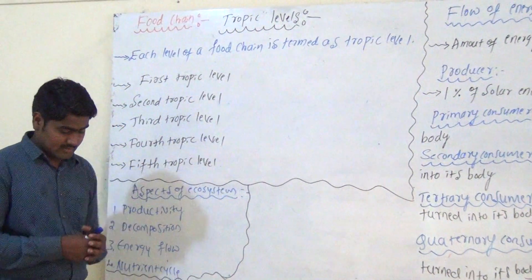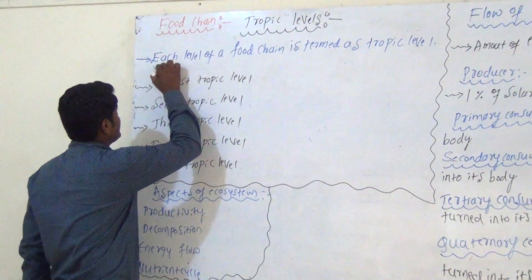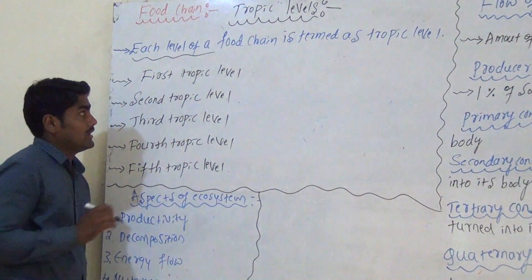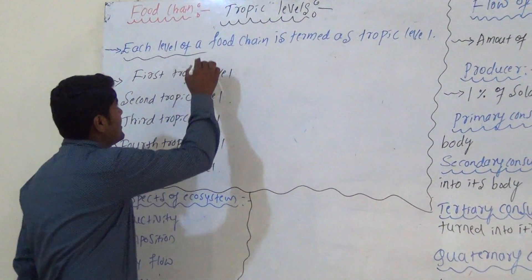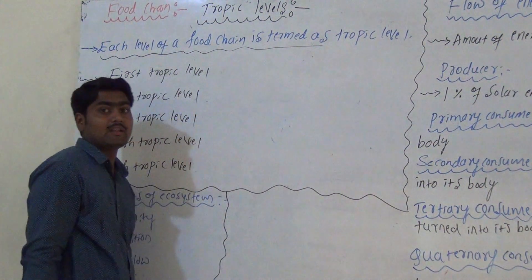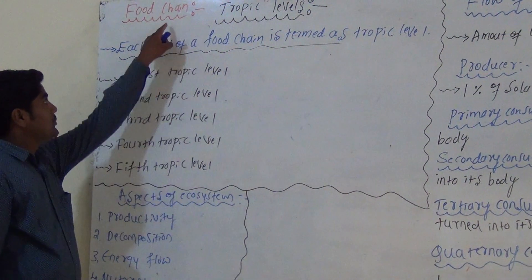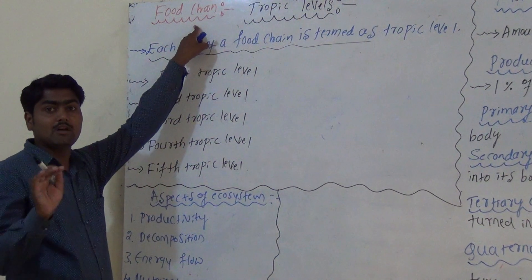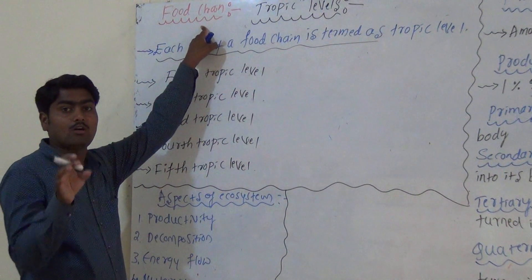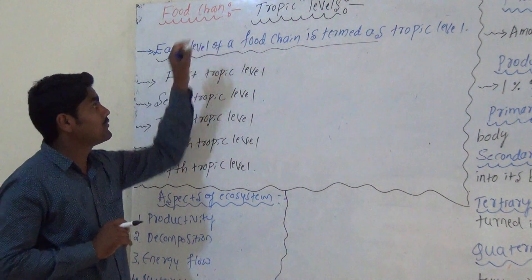Trophic Levels. Trophic Levels means each level of a food chain. Each level of a food chain is called a Trophic Level. A food chain is nothing but a series of living organisms which feed on one another.